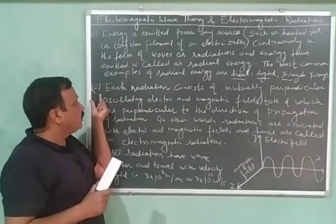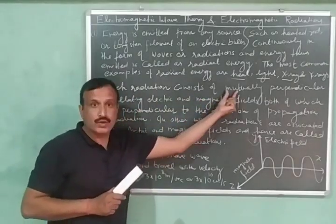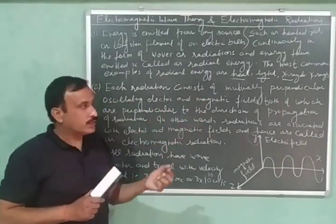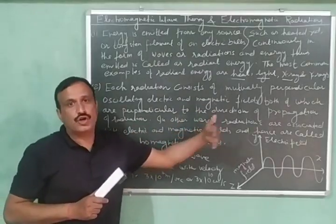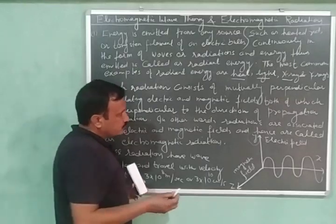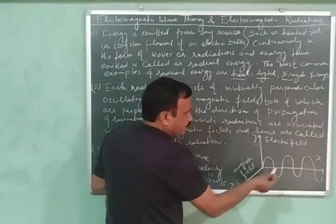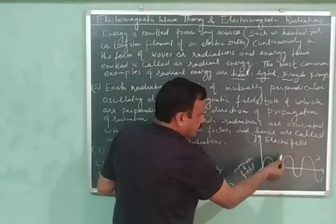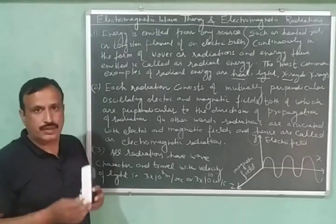And the second postulate is that each radiation consists of mutually perpendicular oscillating electric and magnetic fields and both of which are perpendicular to the direction of propagation of radiation. So let us understand it. So, here we have three mutually perpendicular axis, x-axis, y-axis and z-axis and x-axis is the direction of propagation of radiation.